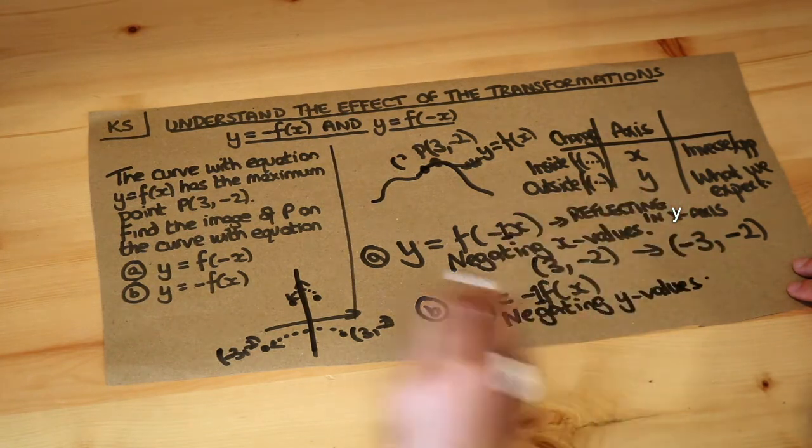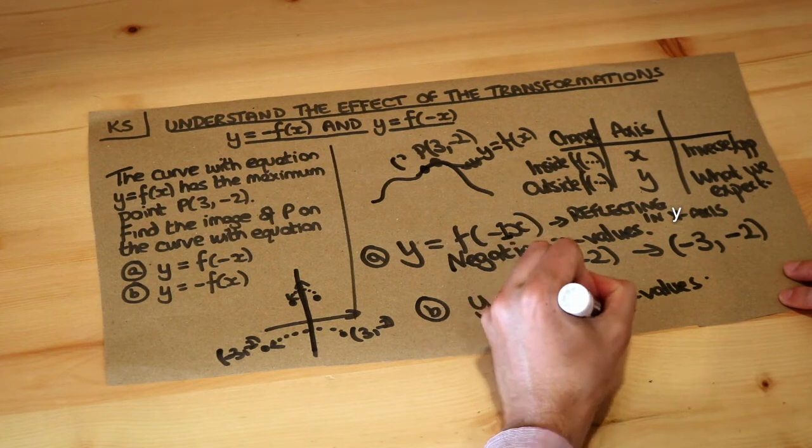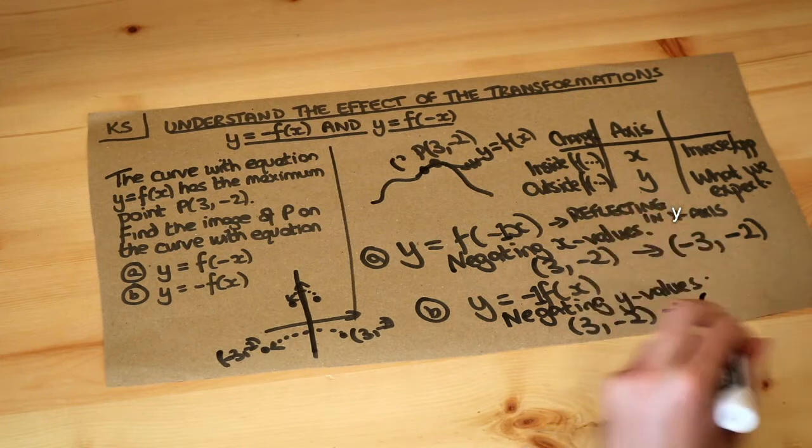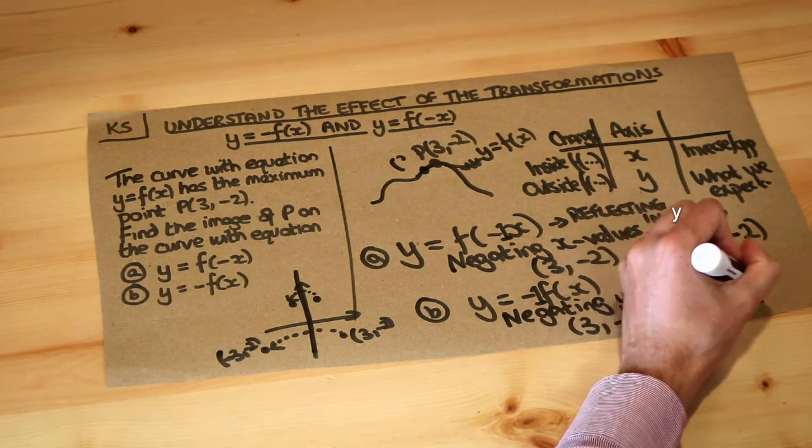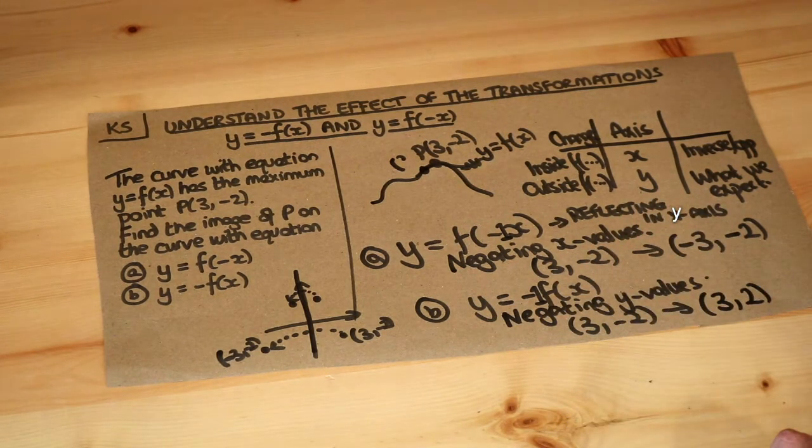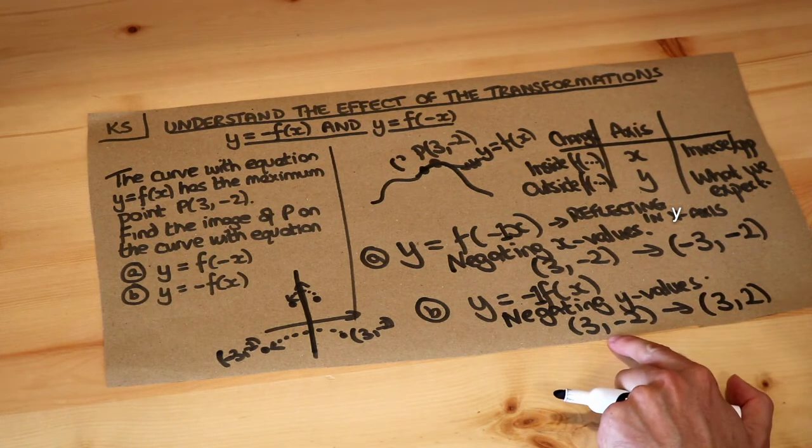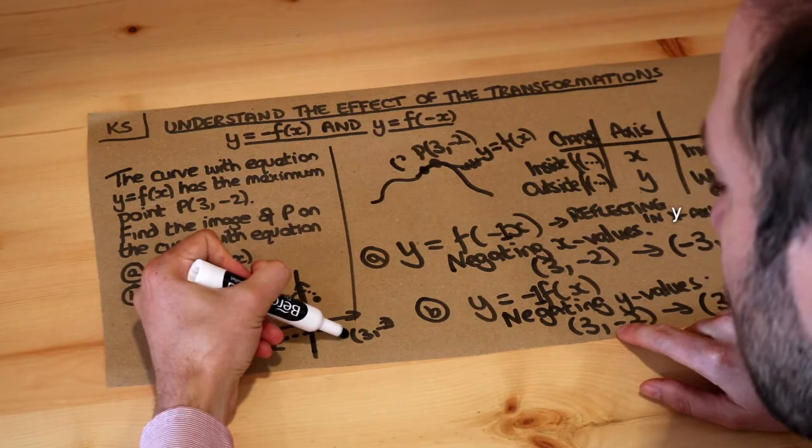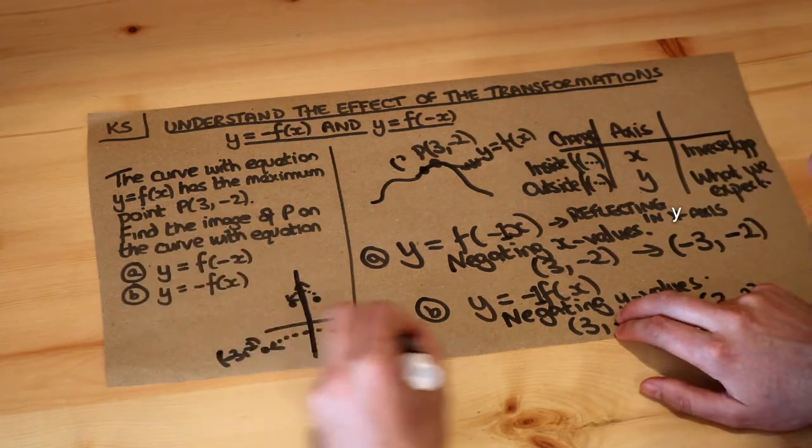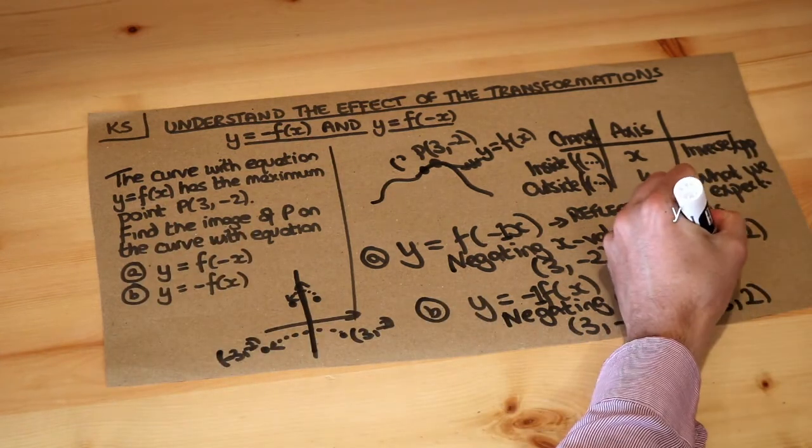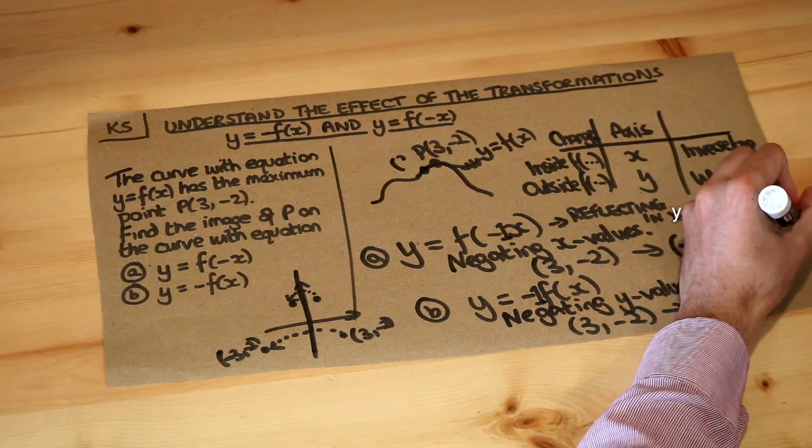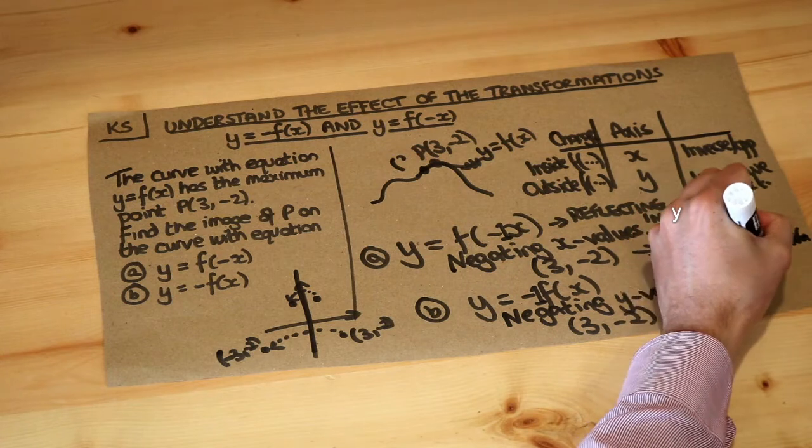So if we had (3, -2) as before, if we negate the y value the minus 2 becomes plus 2 and the x value is unaffected so we get the point (3, 2). And similarly to before, if we're negating the y value then a point down here would become a point up here. We're actually reflecting in the x axis, so that's the same as reflecting in the x axis.